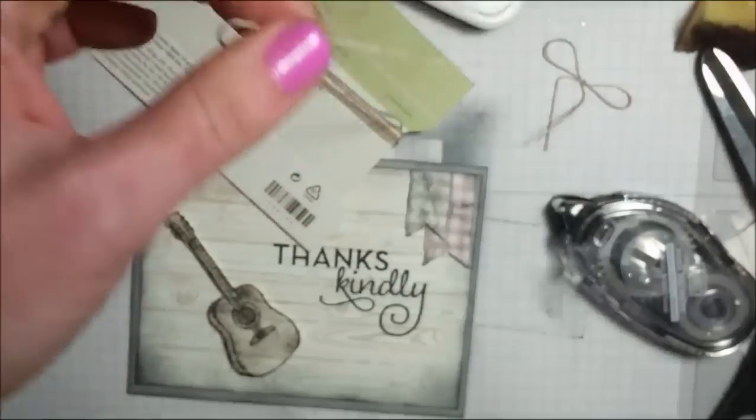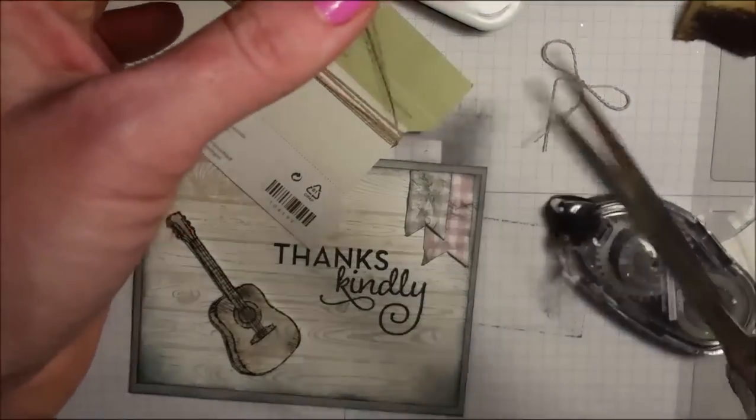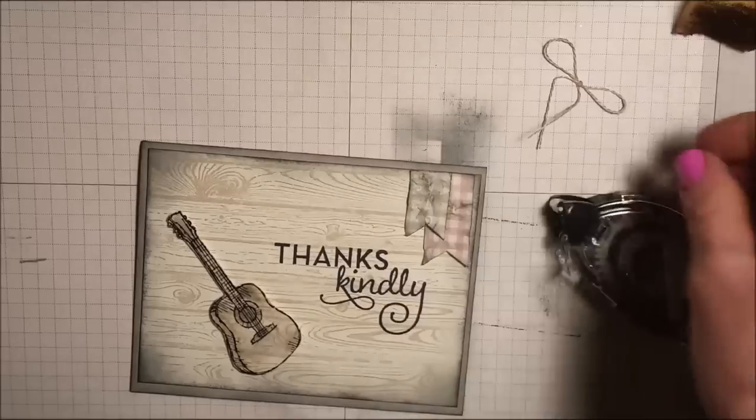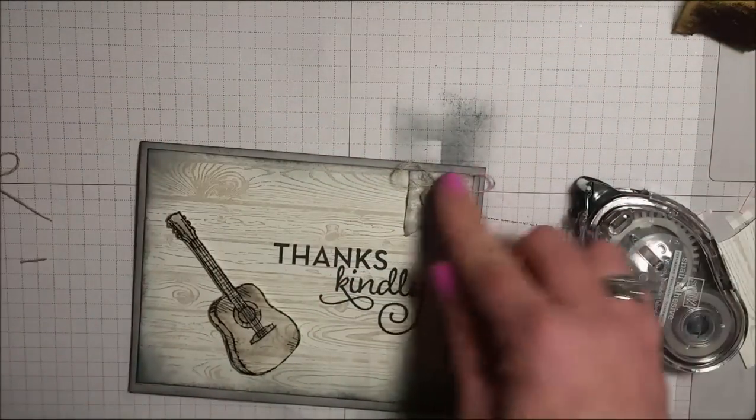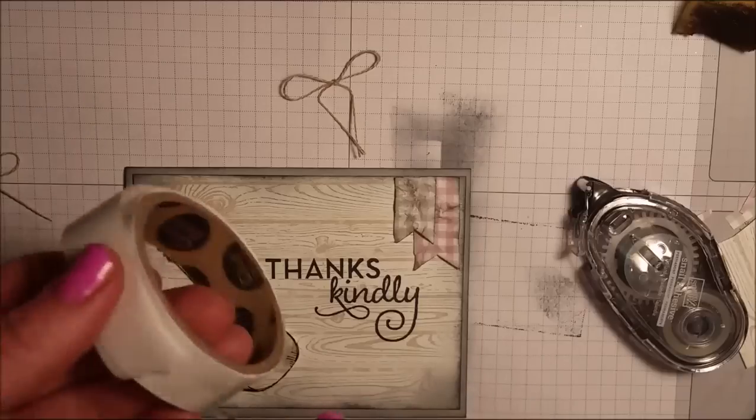Making the second bow just a little bit smaller than the first one. And then we can play around with it once we put it on here. I want those to go right on here like that. I'm going to take a glue dot.